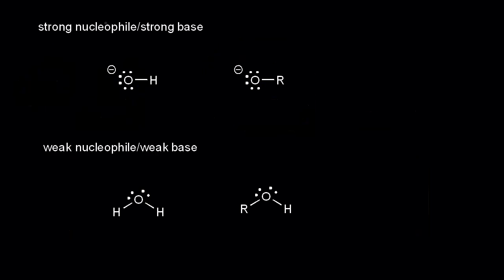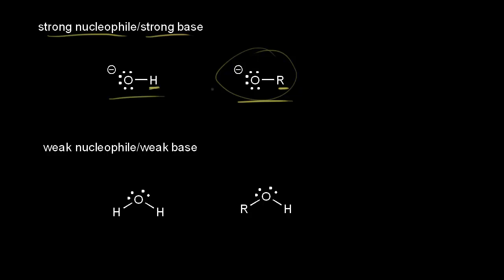Our third category is where our reagent is a strong nucleophile and a strong base. A good example of that is the hydroxide ion. We've already talked about why the hydroxide ion is a strong nucleophile, and we know from experience that hydroxide is a strong base — something like sodium hydroxide is used all the time in general chemistry. If we replace the hydrogen with an alkyl group, we form an alkoxide ion, which functions in a similar way to the hydroxide ion. So they're both examples of strong nucleophiles and strong bases.